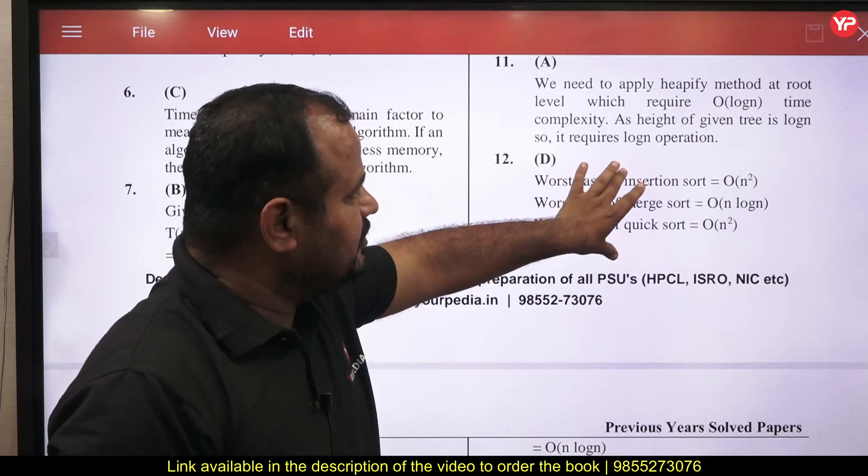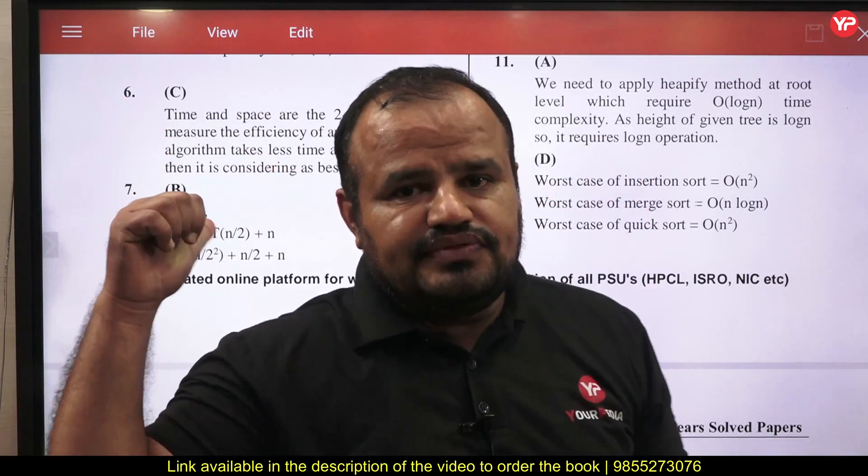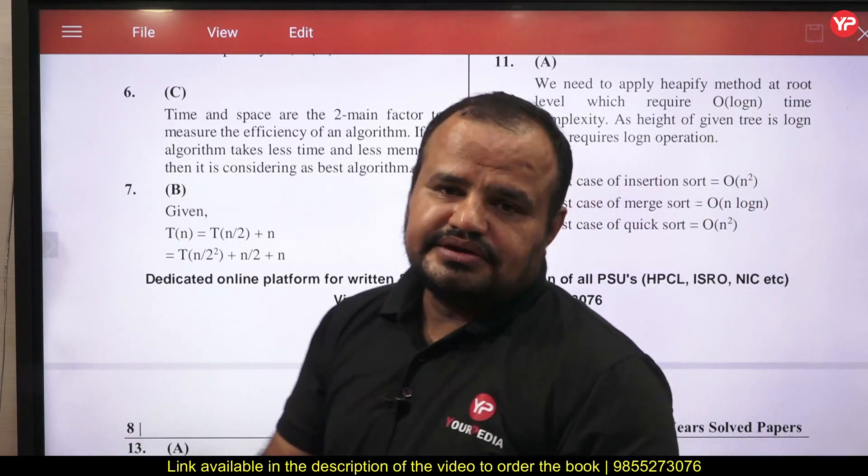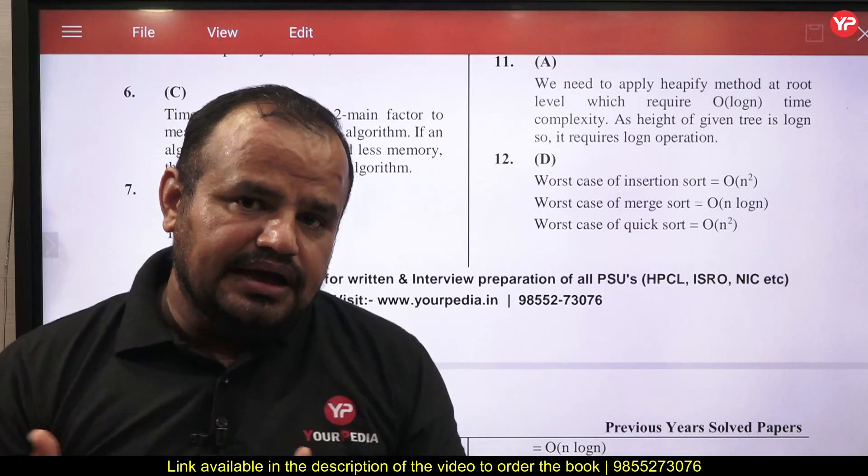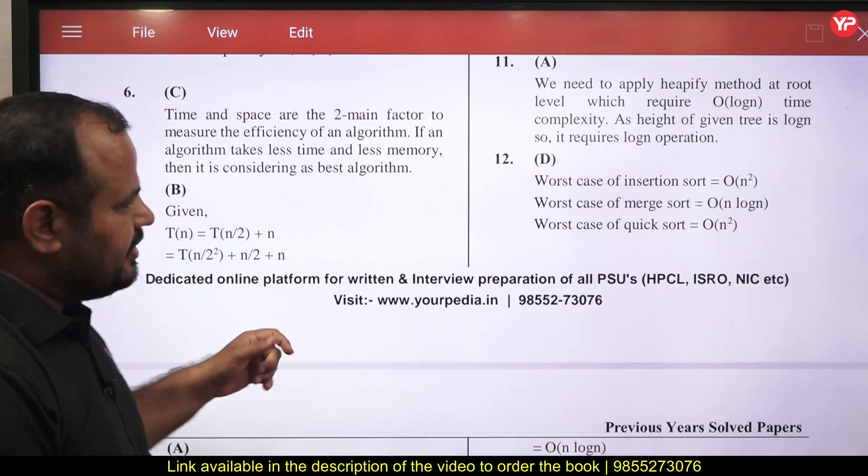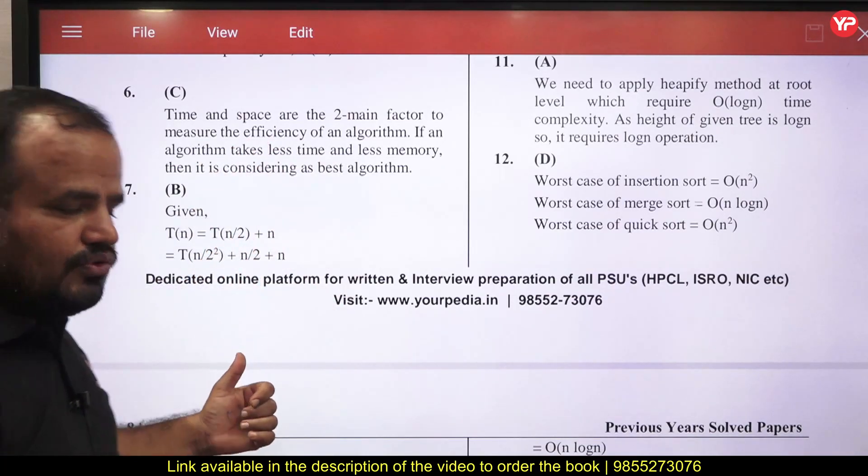If we talk about the next problem, we are giving why worst case time complexity of insertion sort is n square, merge sort is n log n, quick sort is n square. But the point is: where is the explanation of this problem? We explained already this stuff in previous questions. That is why here we just mentioned it in short, because otherwise, if we explain the same thing again and again, it may be difficult to read. It will take more time.